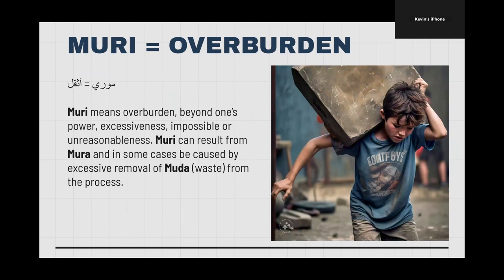Muri is overburden, which means beyond one's power, excessiveness, impossible, or unreasonableness — basically when somebody is just overloaded with work all of a sudden. Like Brian said, an example was when engineering was doing five or six products at once, then there'd be nothing for a while, and then all of them would get their products done at the same time, so they all needed to go online in one week.